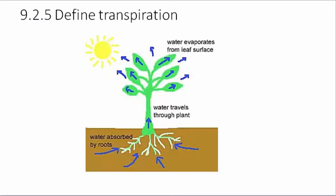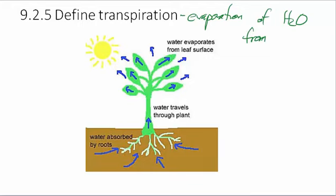9.2.5 says define transpiration. Transpiration is the evaporation of water from leaves, where water gets pulled from the roots through the stems and out through the leaves.